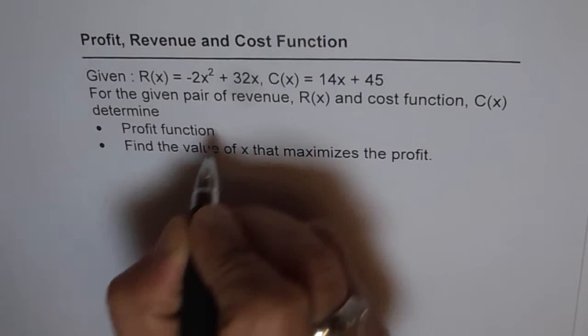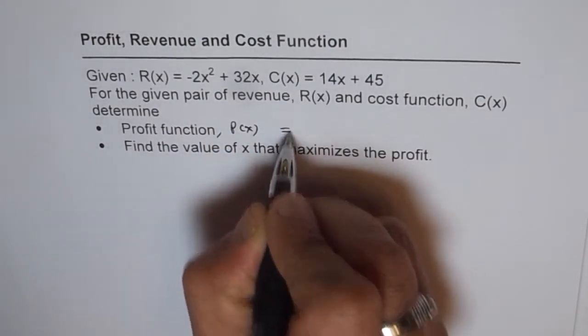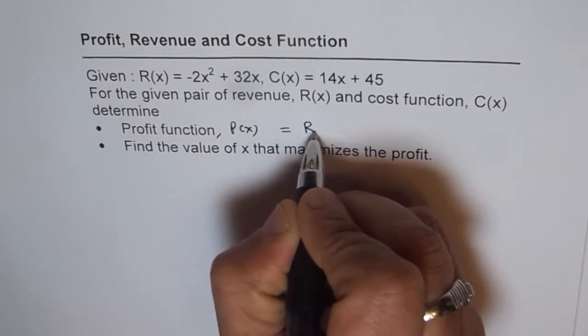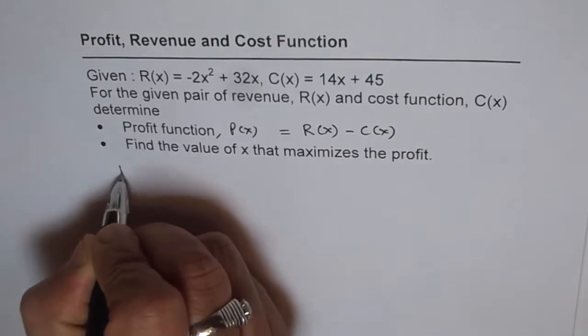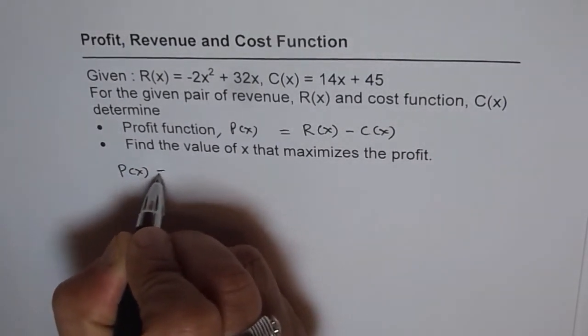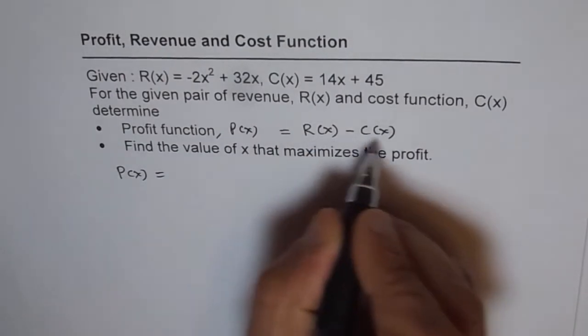Now, profit function, let us say profit function P(x) is actually equals to revenue minus cost. So, we can find profit function by difference of revenue and cost. So, it is revenue minus cost.